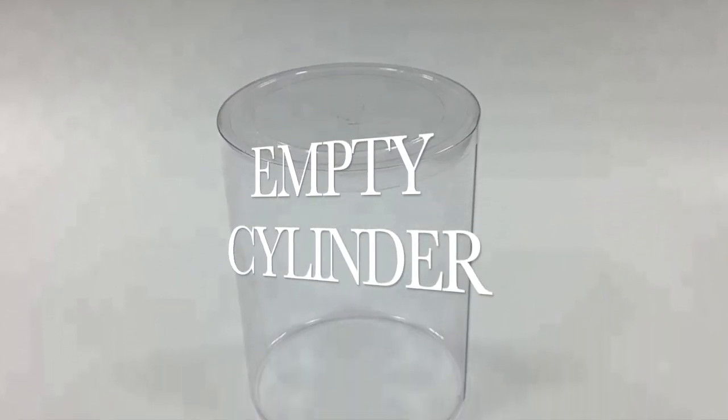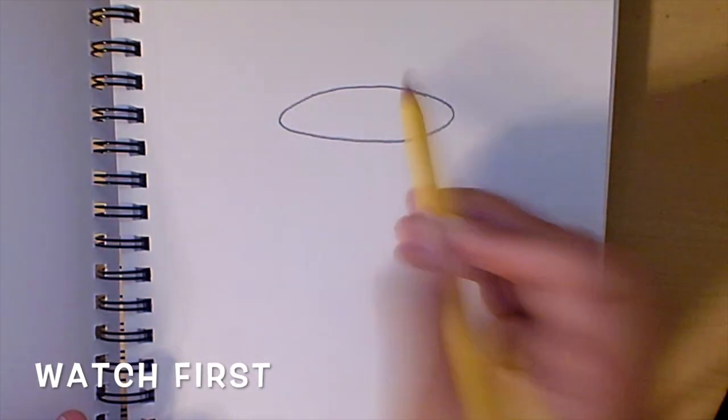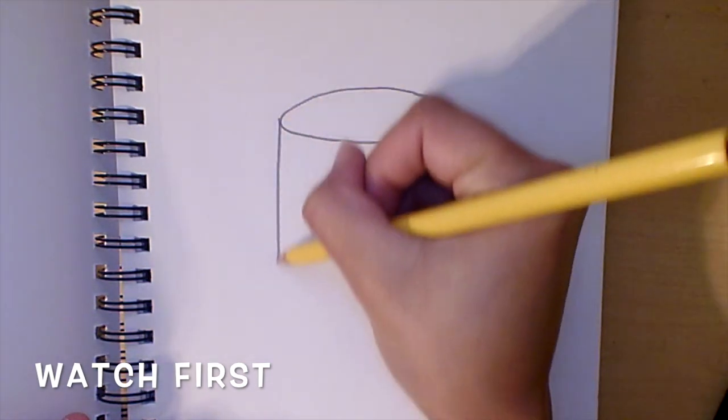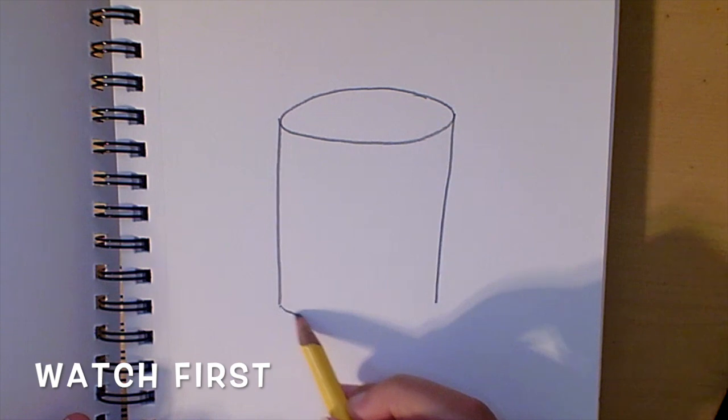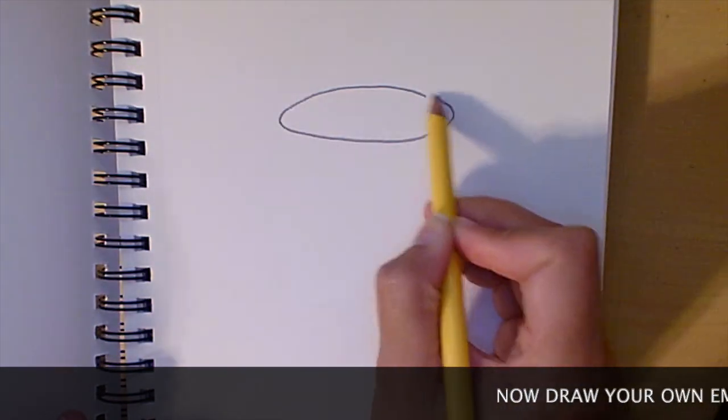Empty cylinder. To make an empty cylinder, start with a circle shape. Then, draw two straight lines from the ends of your circle shape. And lastly, add one more circle shape that's the same as the one you made at the top. Now, draw your own empty cylinder.